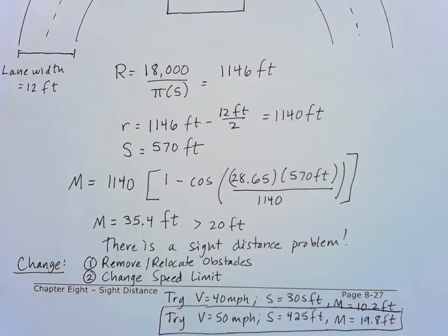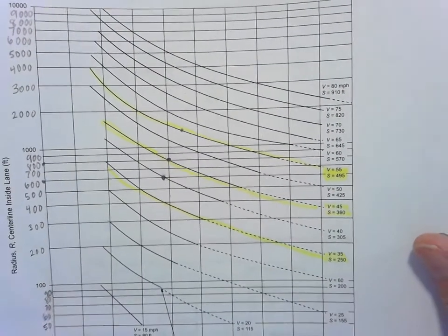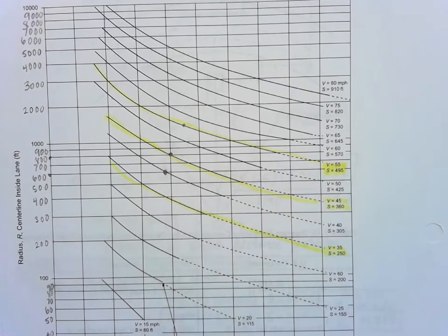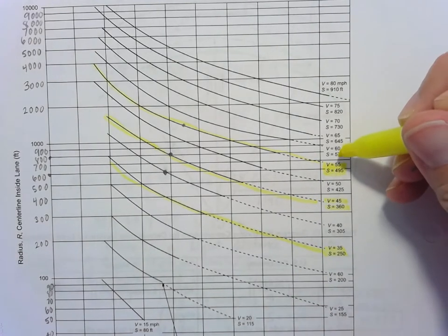Another way of tackling this problem is to use that new chart in the AASHTO Green Book. So we're trying to figure out first what that value of M is for that 60 mile per hour speed limit. We've got a nice graph here where we've got our 60 mile per hour that correlates right with our stopping site distance.